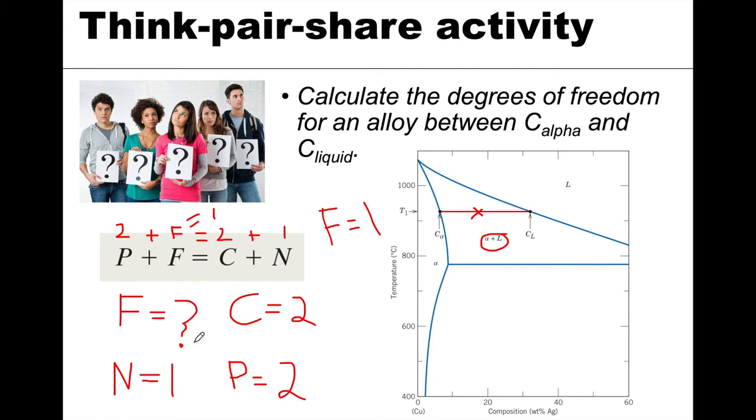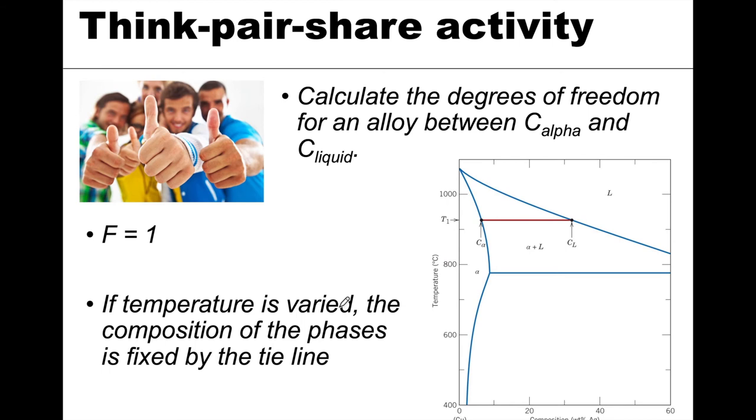Okay, so that doesn't sound like anything, but let's consider the implications of that. What we're saying is that in this region we have one degree of freedom, so we can only move temperature or composition and still be within the same phase field. What that tells me is, okay, so I had this composition before. If I change the temperature from T1 and I increase it, so let's say I'm up here now, I increase the temperature. Well, if you think about this two-phase region...